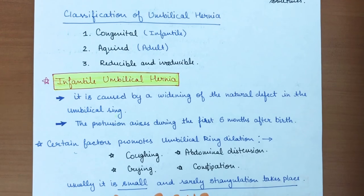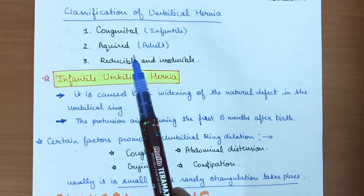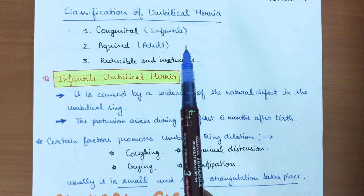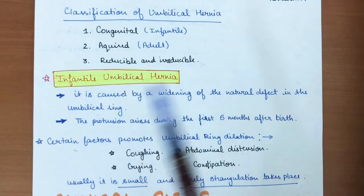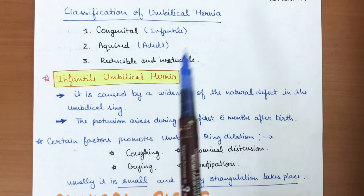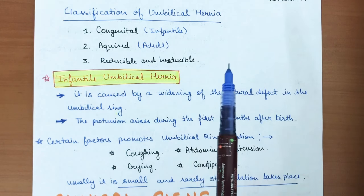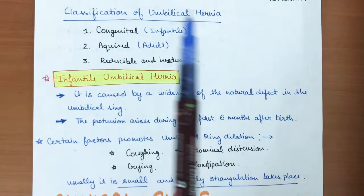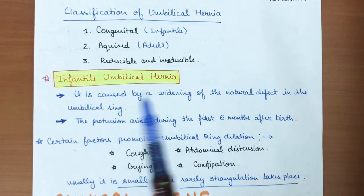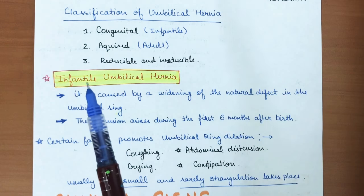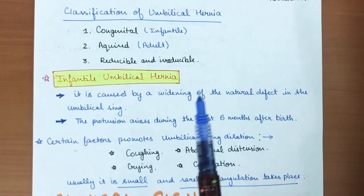The classification of umbilical hernia divides it into three types: congenital infantile, which is present from birth; acquired, which is mostly found in adults; and reducible versus irreducible types. This is the main classification used in umbilical hernia.